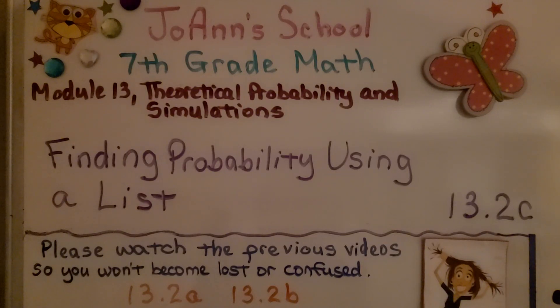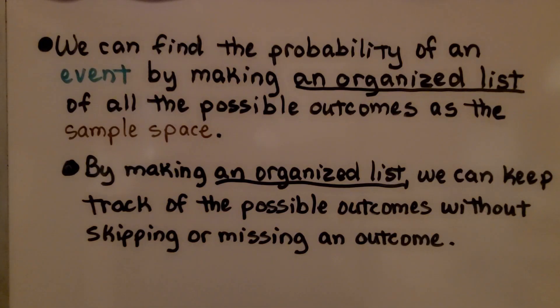We're now at Lesson 13.2c, Finding Probability Using a List. We can find the probability of an event by making an organized list of all the possible outcomes as the sample space. By making an organized list, we can keep track of all the possible outcomes without skipping or missing an outcome.